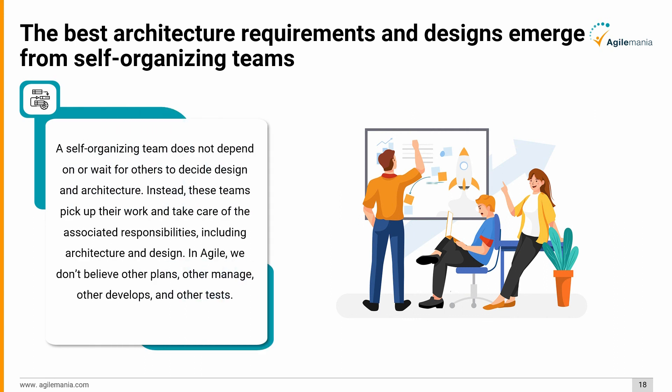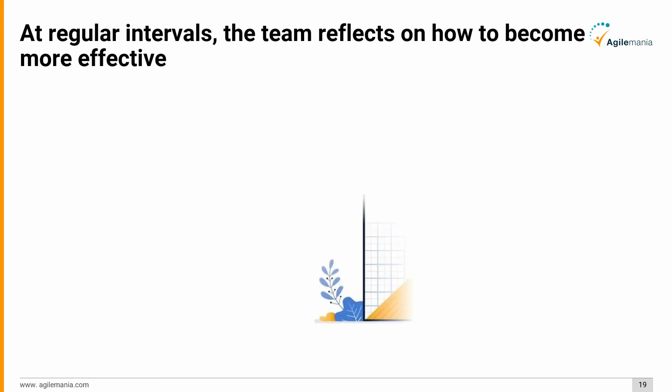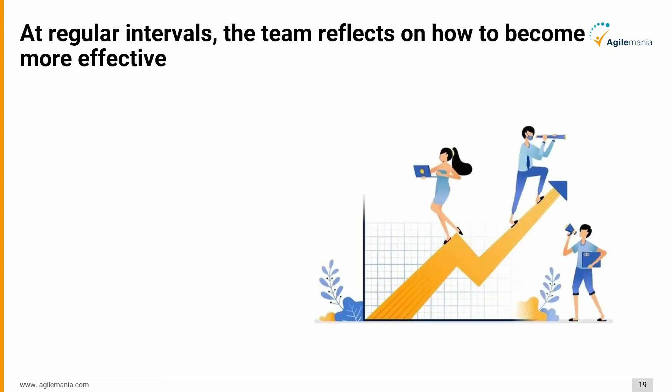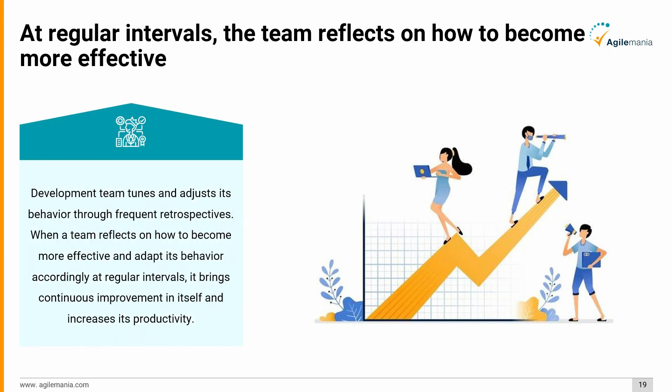The eleventh principle in detail: the best architecture, requirements, and designs emerge from self-organizing teams. A self-organizing team does not depend on or wait for others to decide on design and architecture. Instead, these teams pick up their work and take care of the associated responsibilities, including architecture and design. In agile, we don't believe in one person planning, another managing, another developing, and another testing.